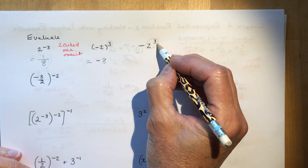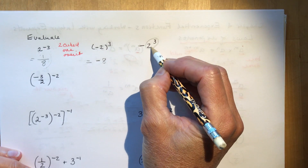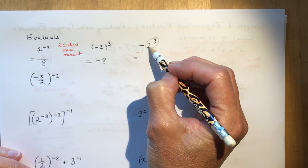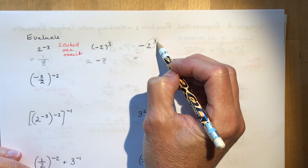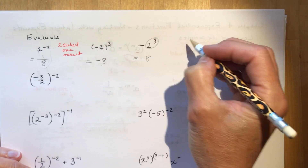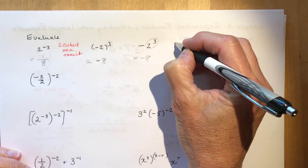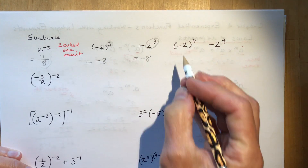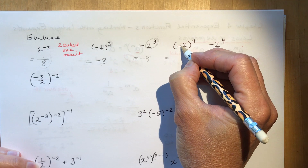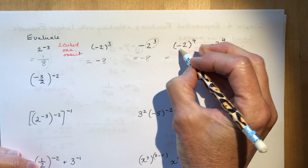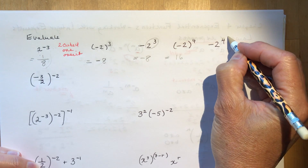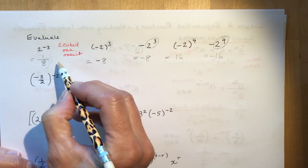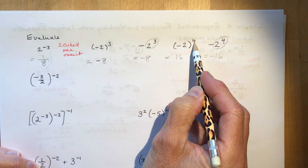Minus two cubed — when the number is not in brackets, you do the power first then multiply by negative one, which still gives negative eight here. But the difference shows with an even power: minus two to the power of four in brackets means a negative times itself four times, giving a positive answer of sixteen. Whereas without brackets, two to the power of four is sixteen, then times a negative one gives negative sixteen.